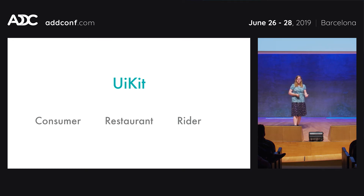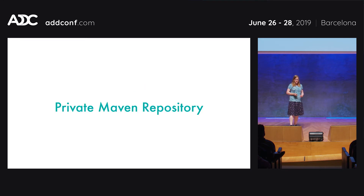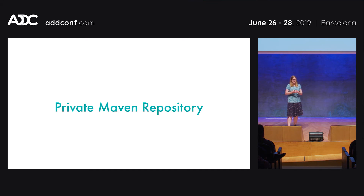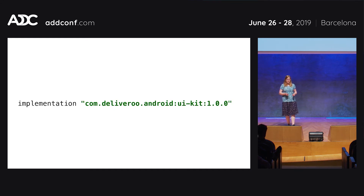We also had to figure out how to integrate this into our applications. We set up a private Maven repository, so you can publish your UIKit module and make it available for everybody within the company. There is a bit of setup overhead, but using it is really straightforward — you just use it like any other dependency on Android. You can also do this on iOS with CocoaPods.